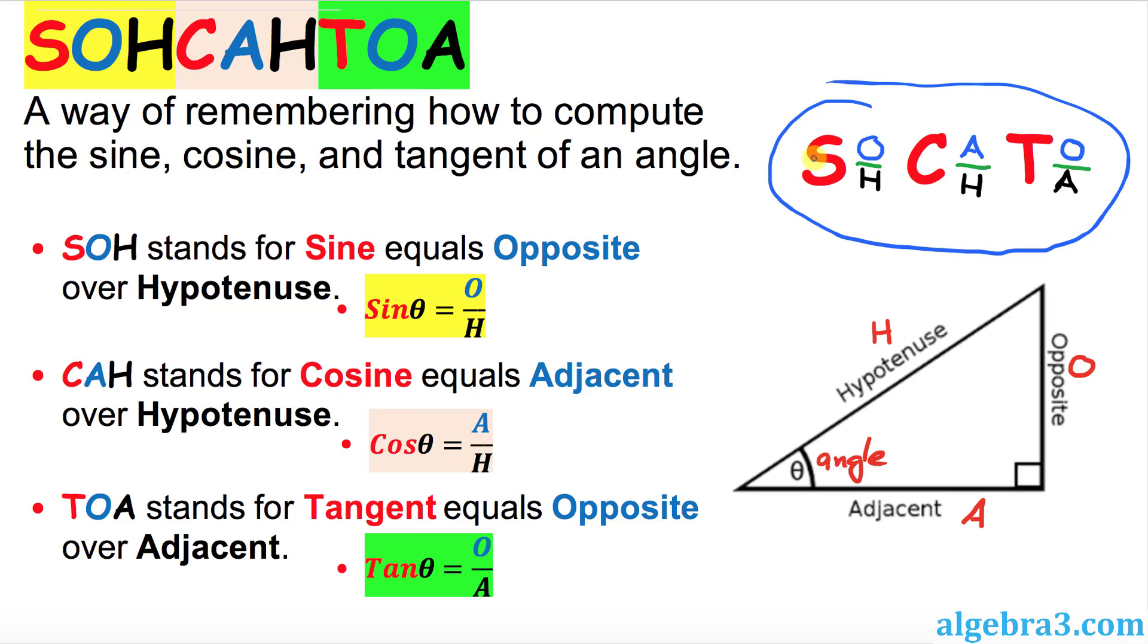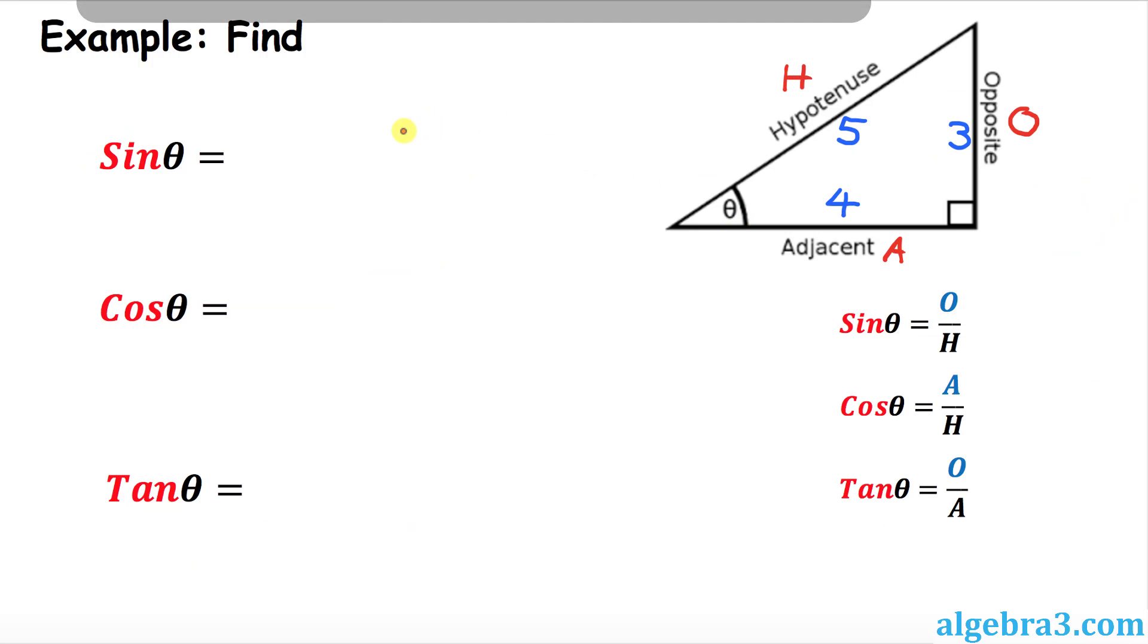SOH: sine equals opposite over hypotenuse. CAH: cosine equals adjacent over hypotenuse. And TOA: tangent equals opposite over adjacent. Let's compute a few trig ratios for sine, cosine, and tangent for this given example.